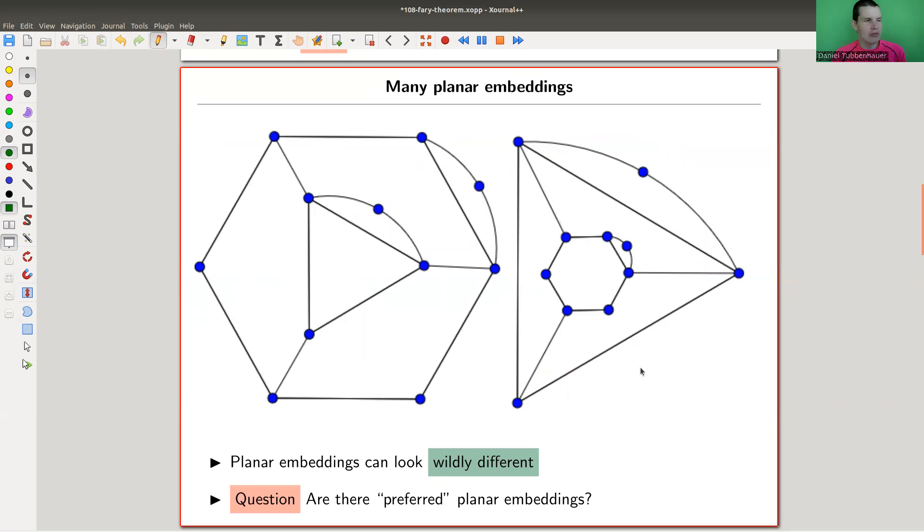And in my little example, I actually failed. So planar embeddings could look actually widely different. So this is the same graph. Let me try to convince you. So this little box here is this little box. And this one, two, three, four, five, six little guy is this guy here and so on. But they look pretty different. So planar embeddings might look really, really different. So the question is that many of them. So is there any preferred choice in a certain way? Are there preferred planar embeddings? And can we find them nicely?